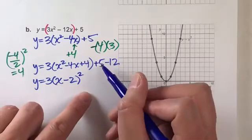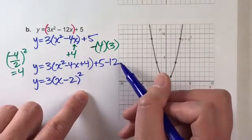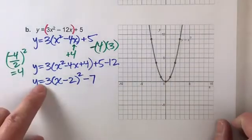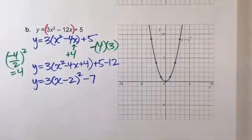Now, on the outside, we've got plus 5 minus 12, which is negative 7. And look, we are done. That is in vertex form. And now we can graph it.